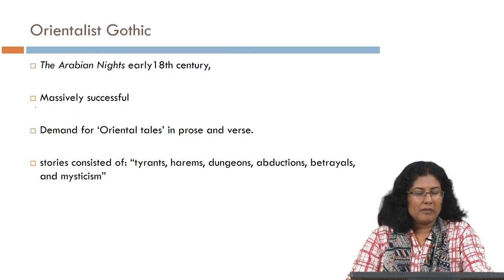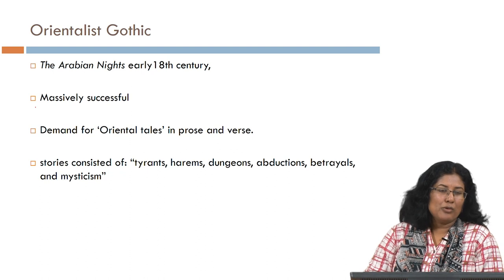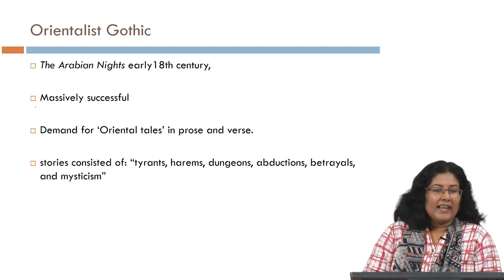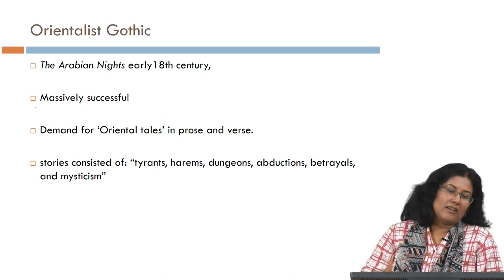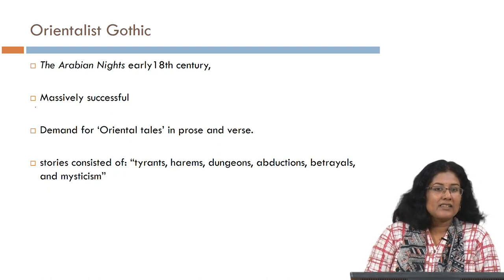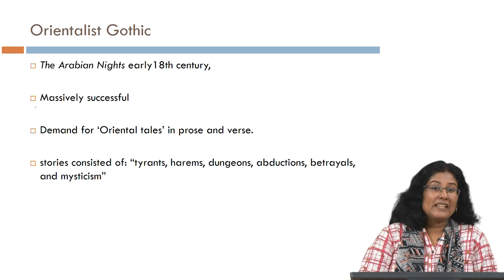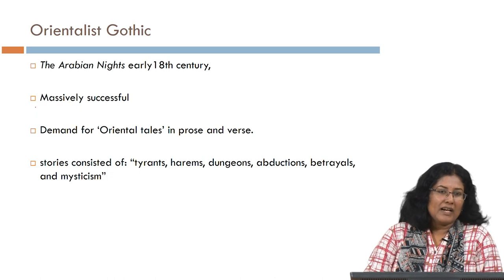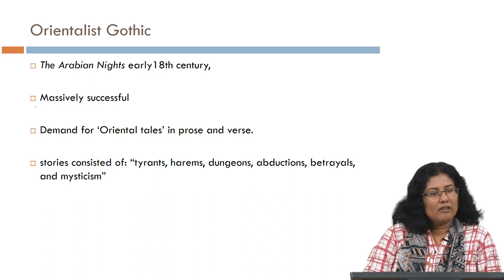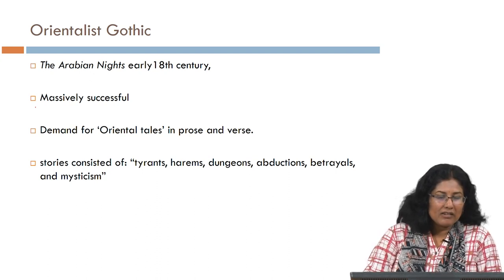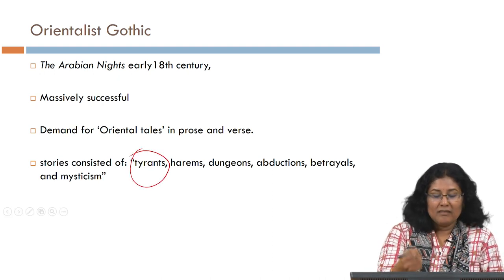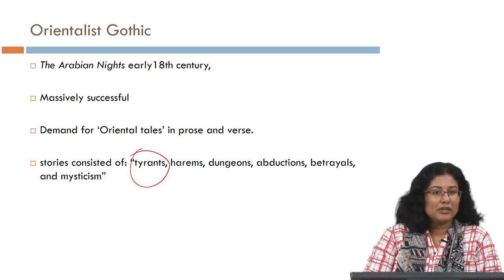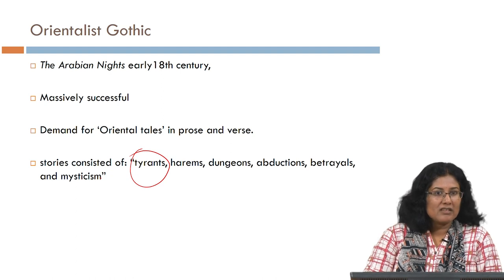The Arabian Nights was published early in the 18th century and was massively successful with the British reading public, who consumed it avidly. It created a big demand for Oriental tales in prose and verse, and authors began to hunt for such stories from all these dark spaces, quote-unquote, in order to entertain the English reading public. The subject matter of these stories consisted of tyrants, harems, dungeons, abductions, betrayals, and mysticism.